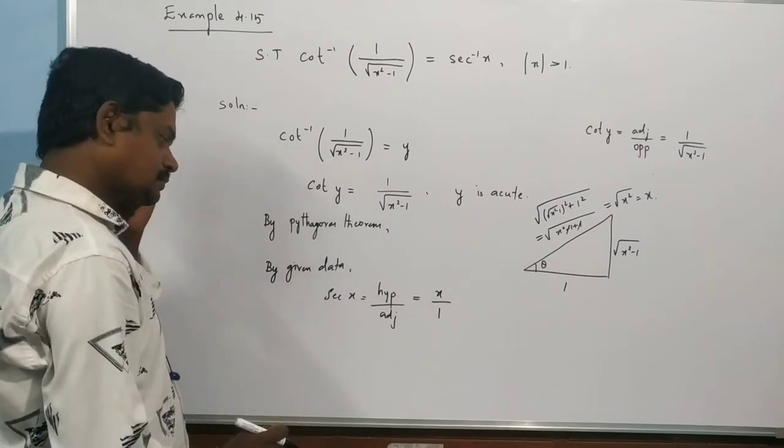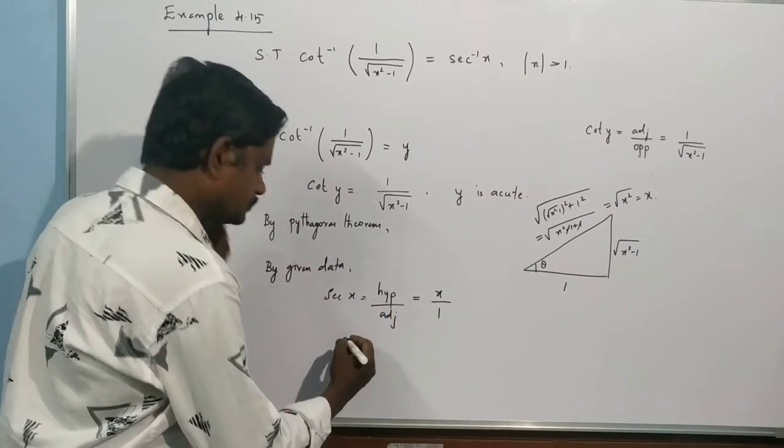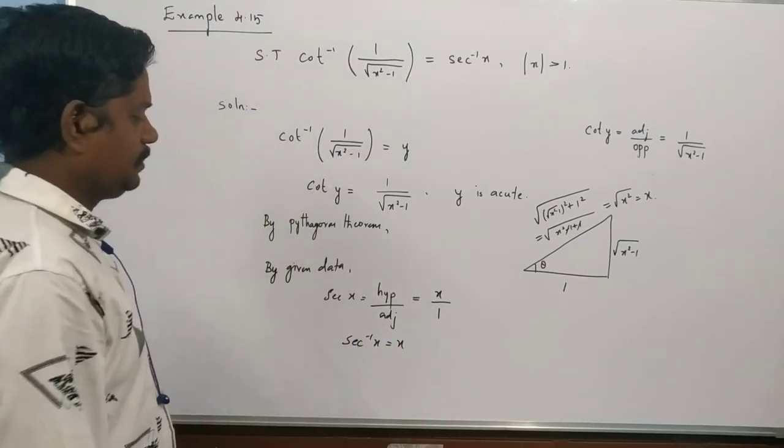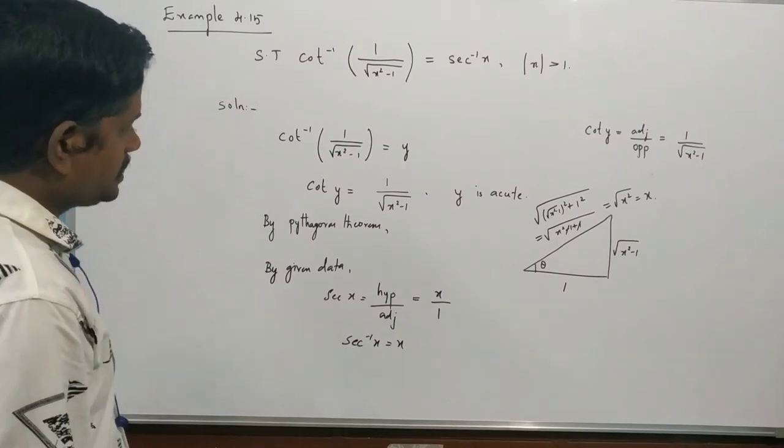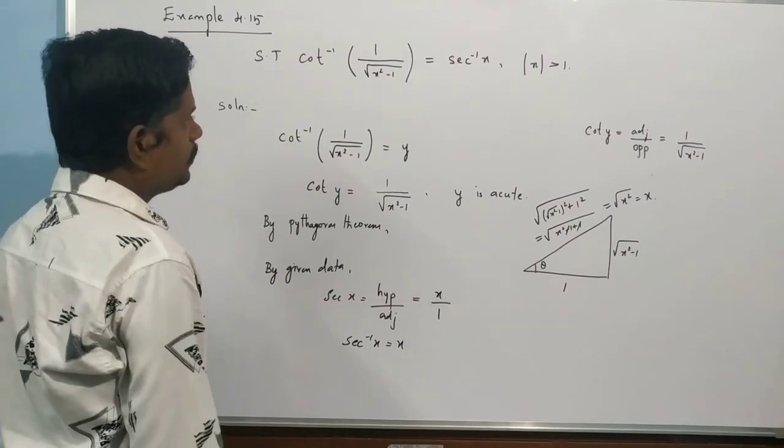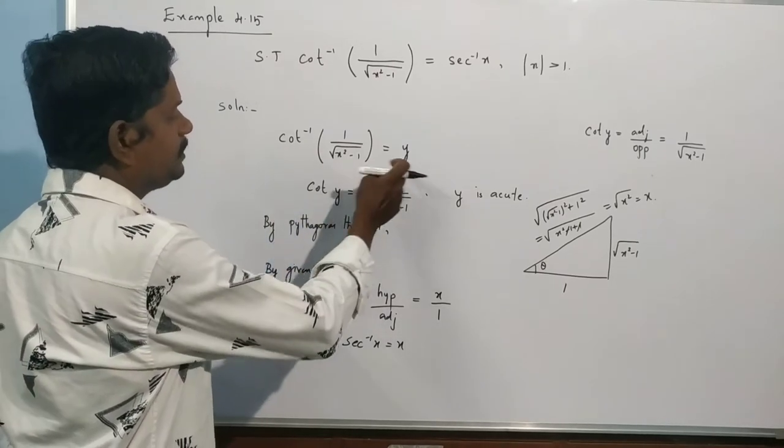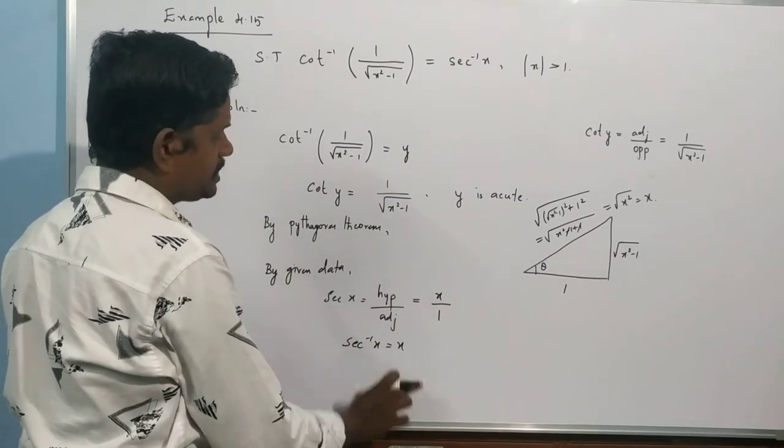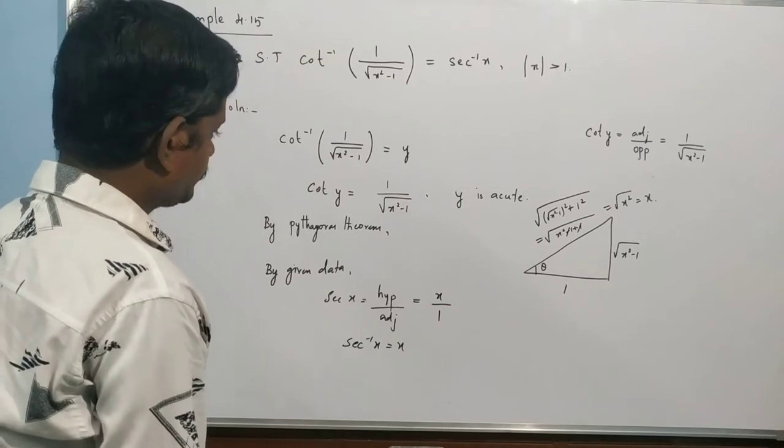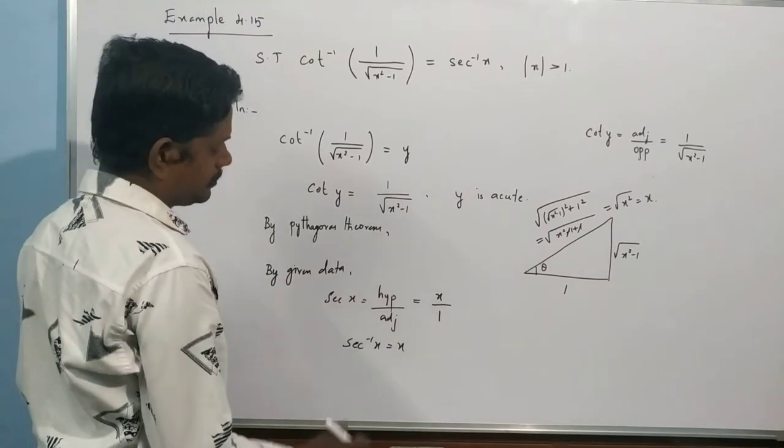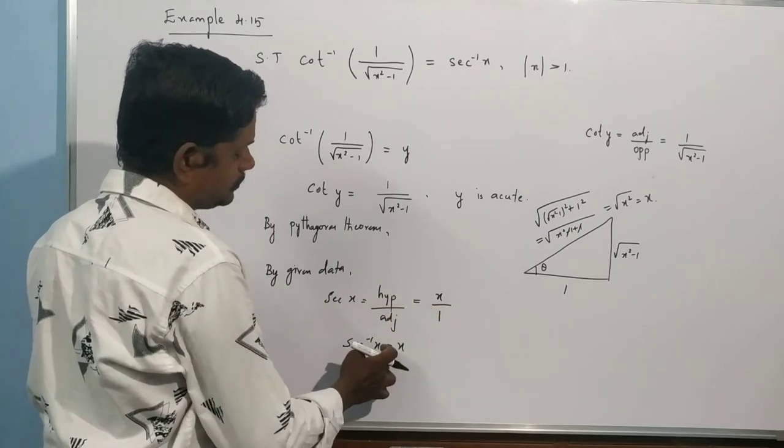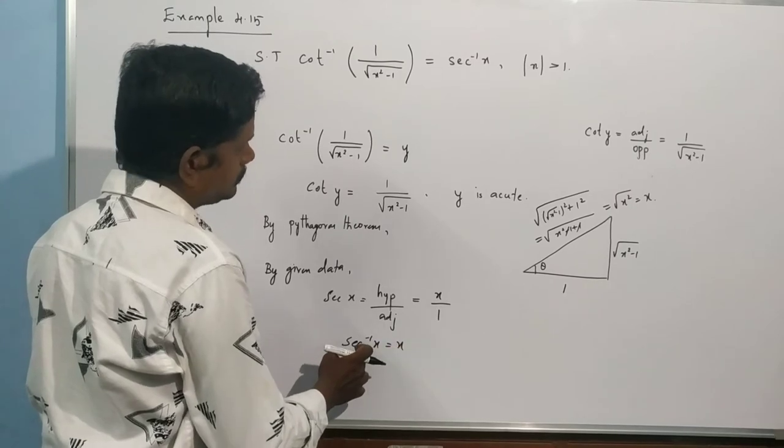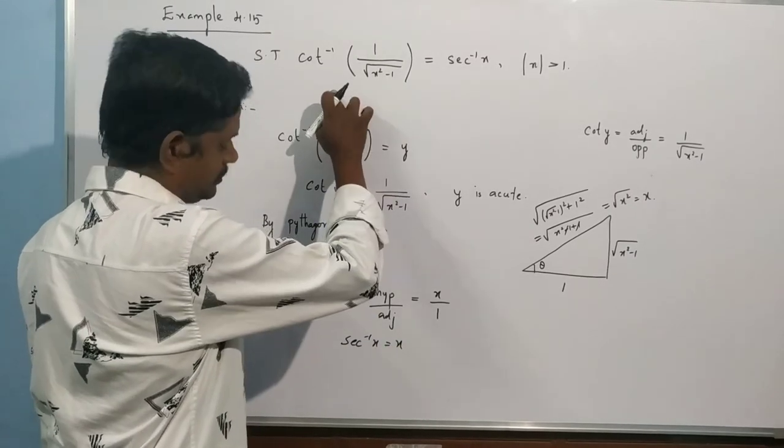Now this value and this value, this is the result of this. If you want to know, cot inverse of this is y. Then cot y is the value. This is sec x. So if this is sec x.